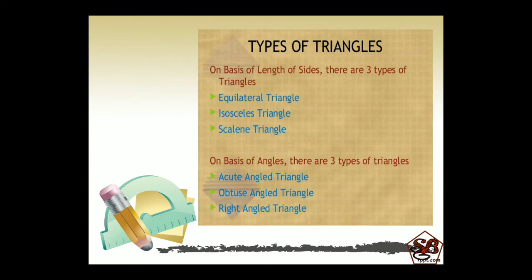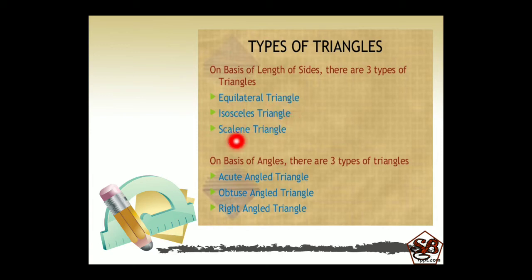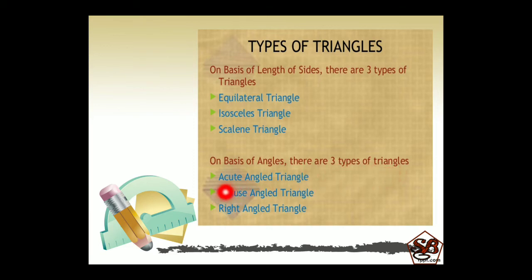Types of triangles. On the basis of length of sides, there are three types of triangles: equilateral triangle, isosceles triangle and scalene triangle. On the basis of angles, there are three types of triangles: acute angle triangle, obtuse angle triangle and right angle triangle.